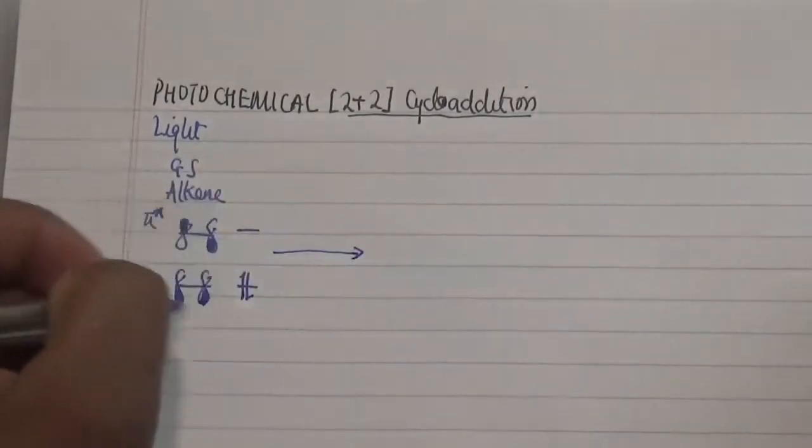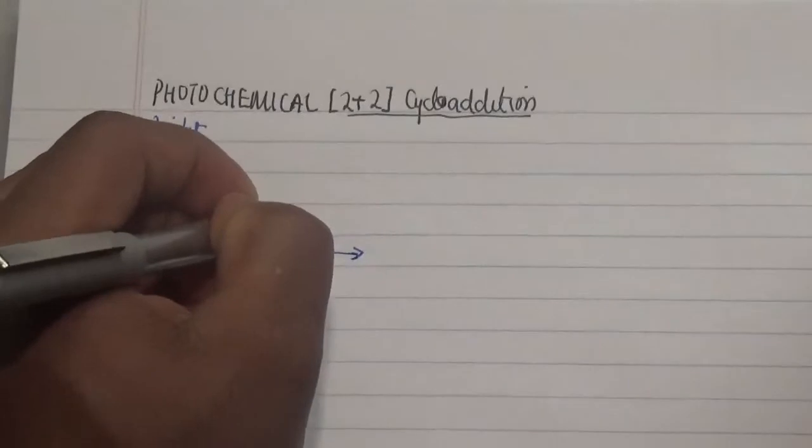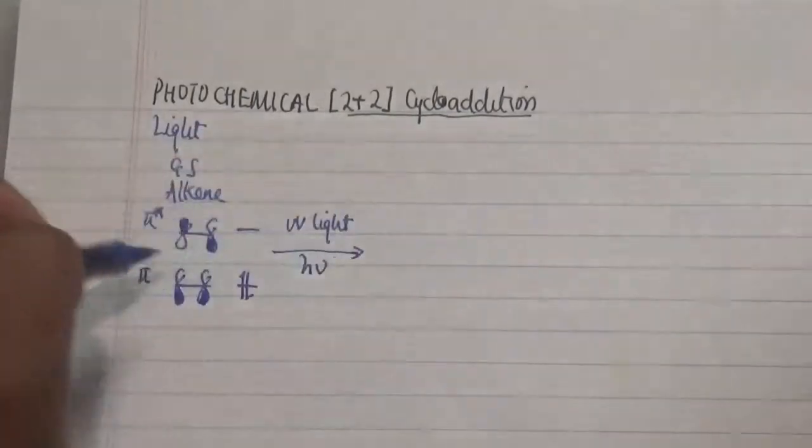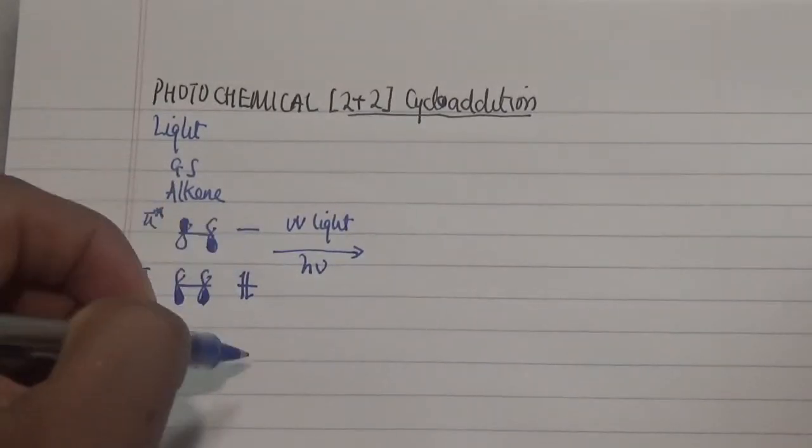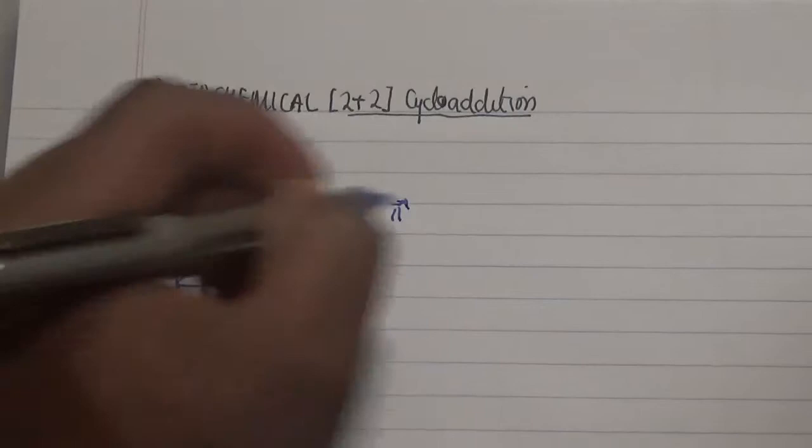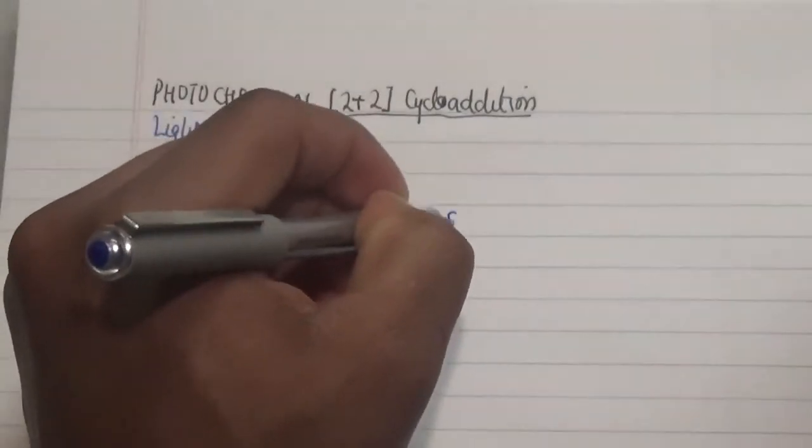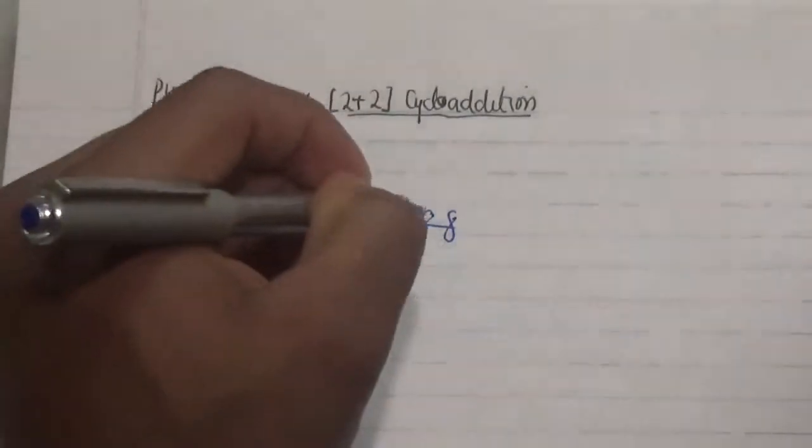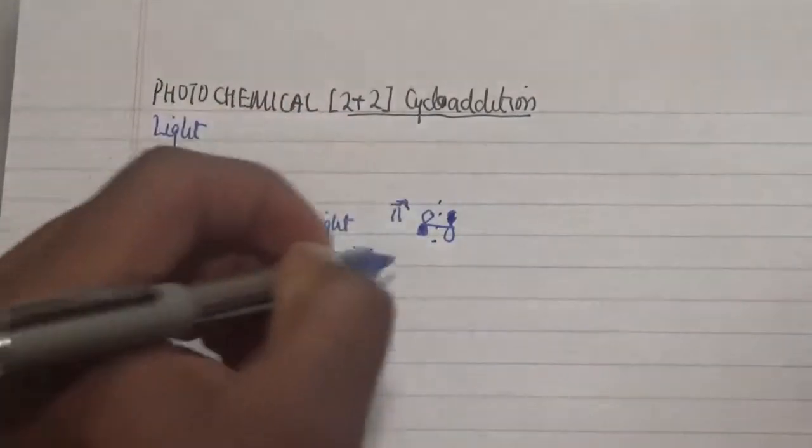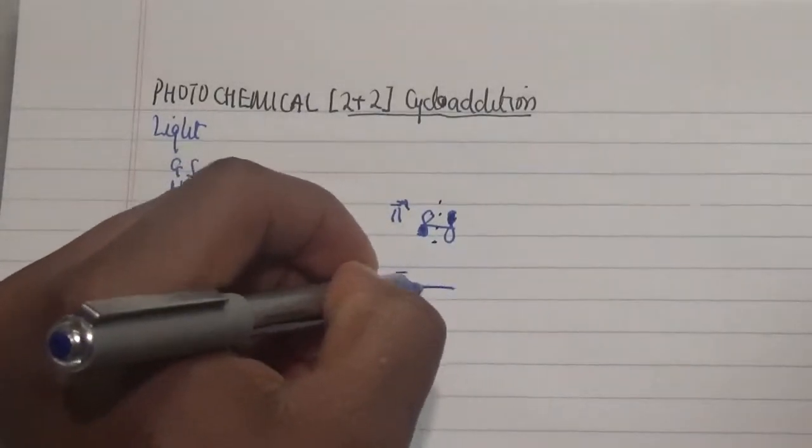However, once you subject this particular compound to UV light, which is a specific amount of photon, what we get as a result is the excitation of one of our electrons into the higher energy, which is the former LUMO. The molecular orbital combinations are the same—it doesn't matter if I shade down bottom as long as it's still out of phase.